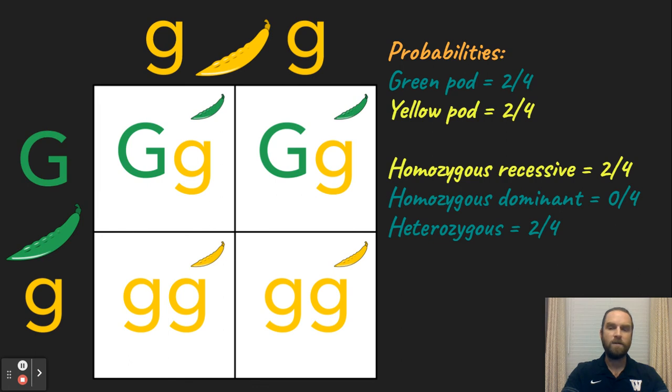And then what's the percentage or the fraction of those that are heterozygous? That means a big G and a little g. Well, that again is two out of four.